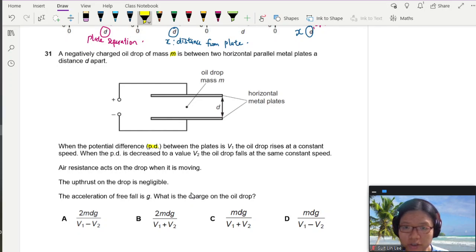What is the potential difference between the plates when the potential difference between the plates is V1? The oil drop rises at a constant speed. Let's draw. So we have the oil drop. It's rising with a constant speed V1.